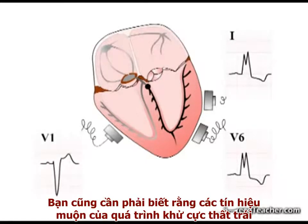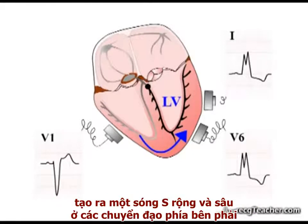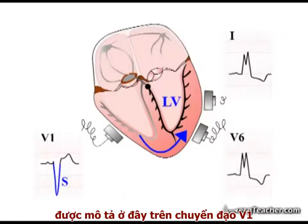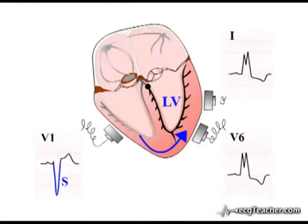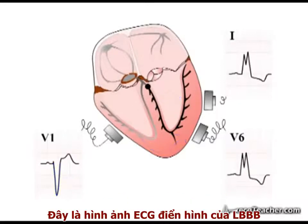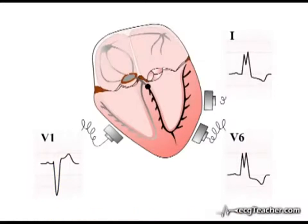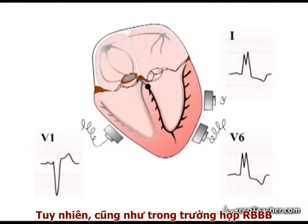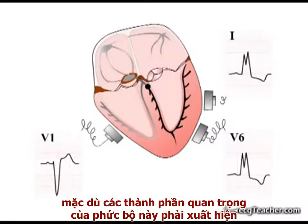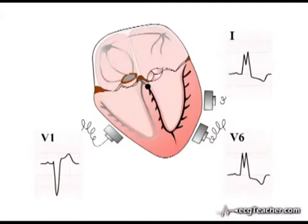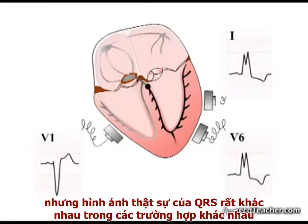The delayed signal from left ventricular depolarisation results in deep, wide S waves in the right-sided chest leads, illustrated here in V1. These are the classical ECG findings described in left bundle branch block. However, just like right bundle branch block, although key elements of these morphologies must be present to make the diagnosis, the actual appearance of the complexes varies greatly between cases.